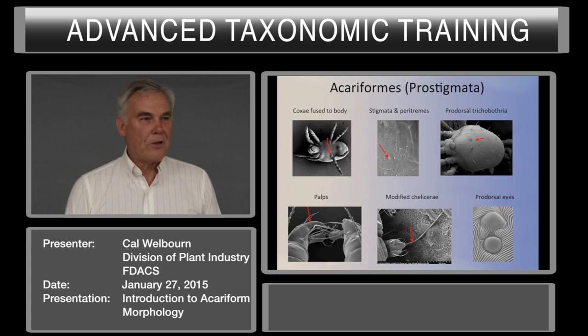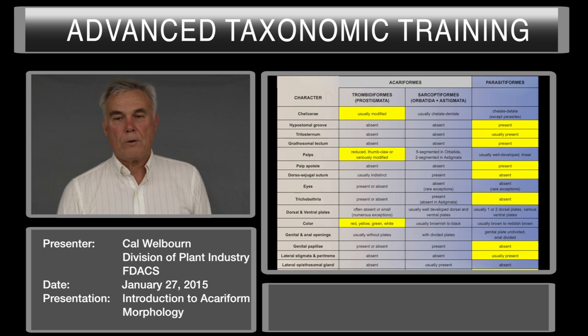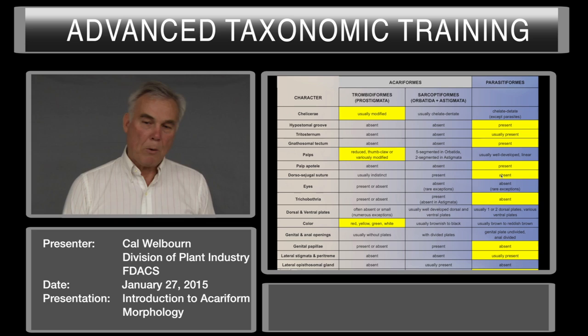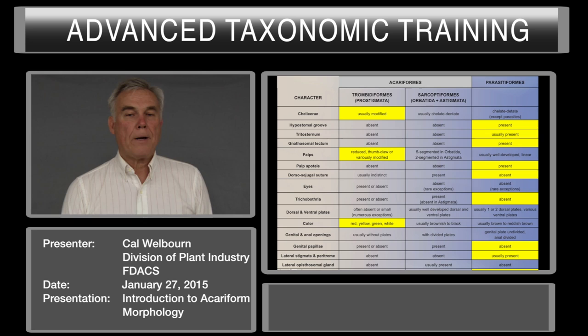This is a summary of characters comparing the Acariformes and the Parasitiformes. Again, the hypostomal groove is present in the Parasitiformes. Thinking in terms of the Mesostigmata, they have a tritosternum, the gnathosomal tectum (although it can be hard to see), the palp tarsus has an apotele, they don't have dorsal sejugal viral, they don't have trichobothria, they don't have genital setae, they have lateral stigmata and paratremes, and the coxal leg segment is movable.